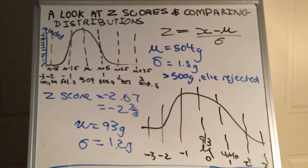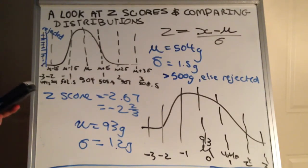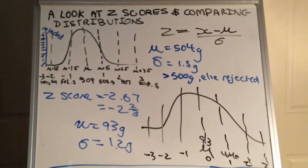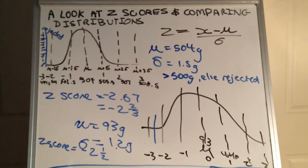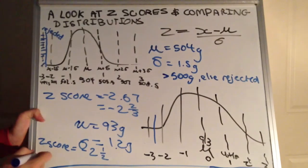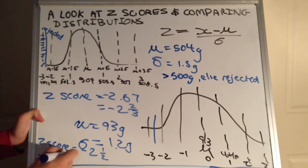We can go to our calculator and calculate based on the formula. We go alpha y equals down to number 2 to get the fraction bar. The x value is 90, because we want to work out where 90 fits on the normal distribution. We take mu which is 93, and divide by 1.2. We find that the z-score for 90 grams is negative 2.5, which is negative 2 and a half. So cans lighter than 90 grams — those with a z-score less than negative 2.5 — will be rejected.